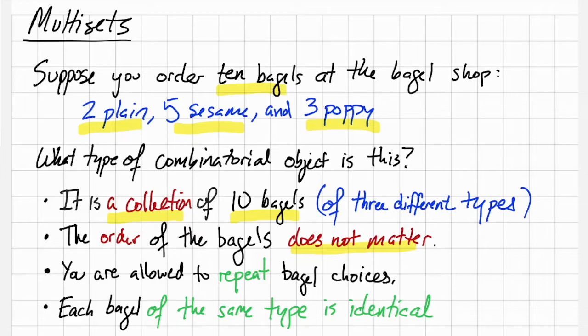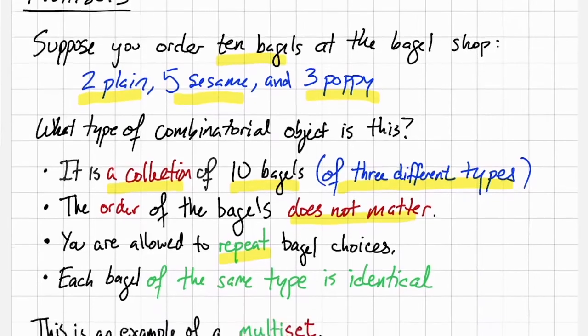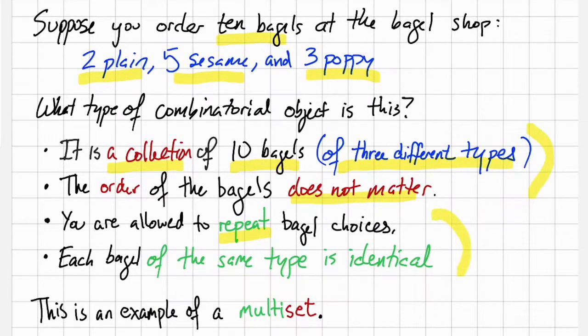It's a collection of 10 bagels and the order of the bagels does not matter. So this feels like a set. Order doesn't matter. At the same time, these 10 bagels are of three different types and you're allowed to repeat the types of bagels.